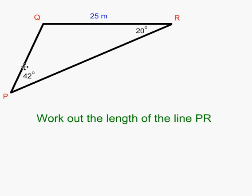We are told two of the angles. This one is 42 degrees and this one is 20 degrees. Remembering that means we could, if necessary, work out the third angle. We are told the length of one of the sides is 25 metres and the triangle is labelled PQR.